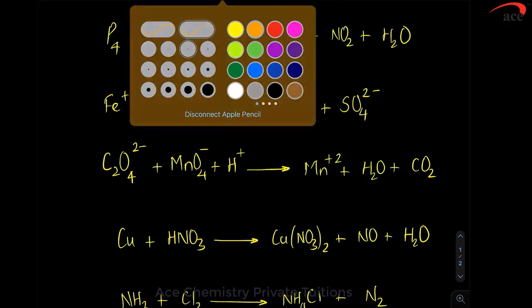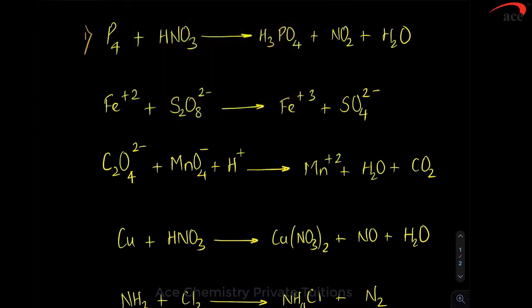If you check the first reaction, the oxidation number of phosphorus is 0, nitrogen is +5, hydrogen is +1, oxygen is −2. On the product side, hydrogen is +1, phosphorus is +5, oxygen is −2, nitrogen is +4, oxygen is −2, hydrogen is +1, oxygen is −2.